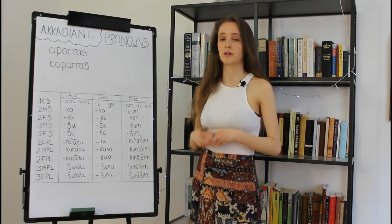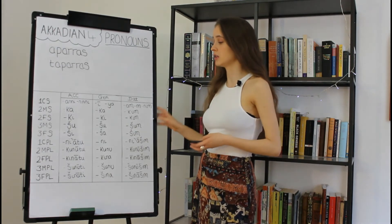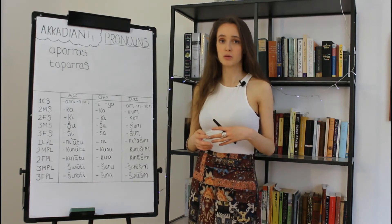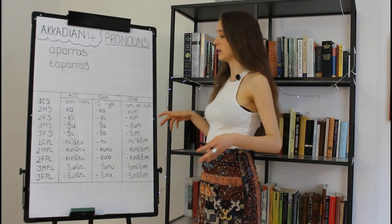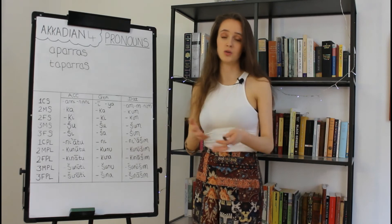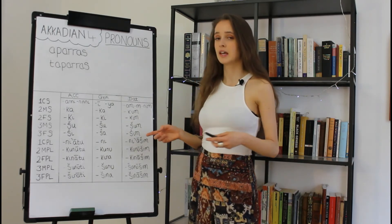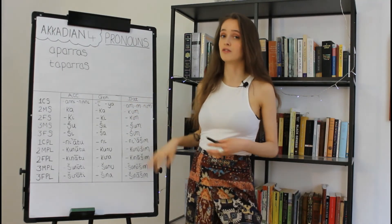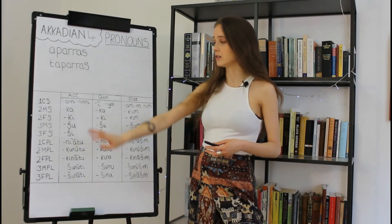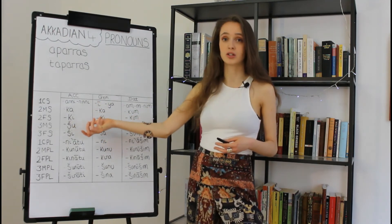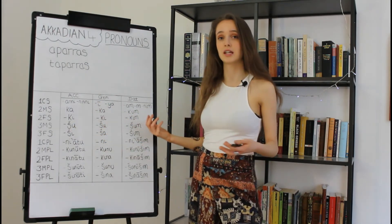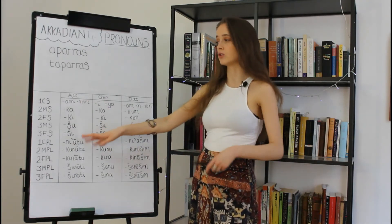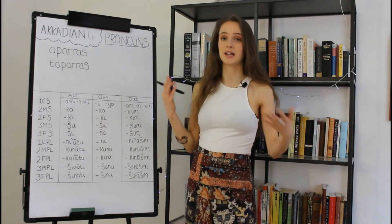Another thing to be aware of regarding dative pronominal suffixes: by the Old Babylonian period, mimation had begun to fall out of use. So by the Old Babylonian period, you would probably see our dative suffixes sounding more like '-ku,' '-ki,' '-šu,' '-ši,' '-ni,' '-ši,' without the mimation at the end. And similarly, by the first millennium our dative suffixes had actually fallen out of use completely, and the accusative suffixes had usurped both the function and translation of the dative. So in a first millennium tablet, accusative suffixes could be translated as 'me' (accusative) or 'to me' (dative).